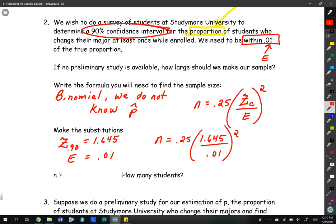So n is equal to 0.25 times 1.645 over 0.01 squared. That is going to give us 6765.0625. We round up to the nearest whole number. How many students would we need for the future survey? We would need 6,766.